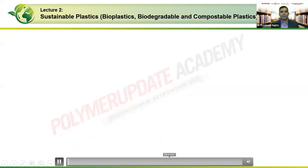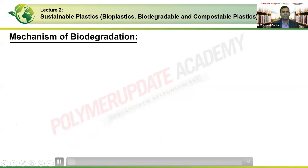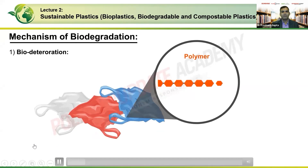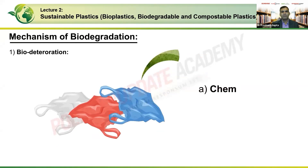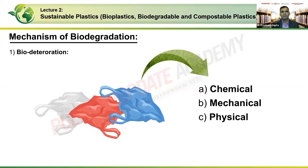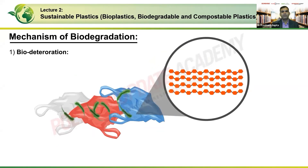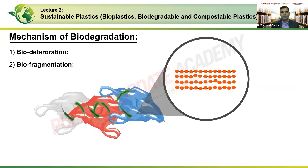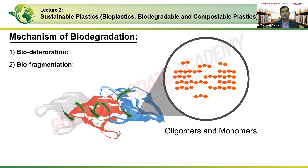The first stage of biodegradation is biodeterioration, wherein polymers — long chains of repeating units or monomers — undergo chemical, mechanical, and physical changes as a result of microorganisms' biological activity on the surface of the material. The observable change is largely mechanical property loss due to chain scission. During the second stage, biofragmentation, continued microbial activity leads to the breaking down of polymers into oligomers and monomers, which are the intermediate and starting materials respectively.